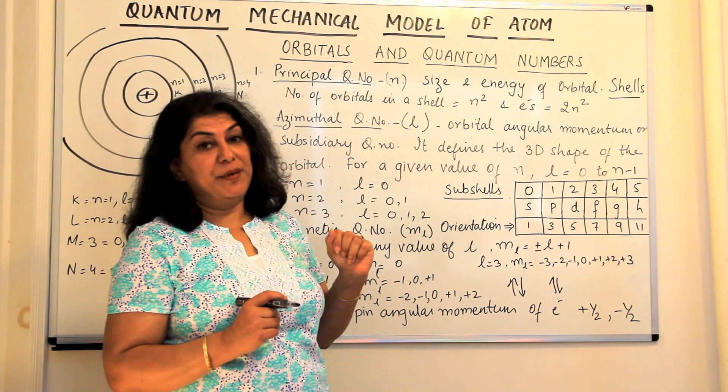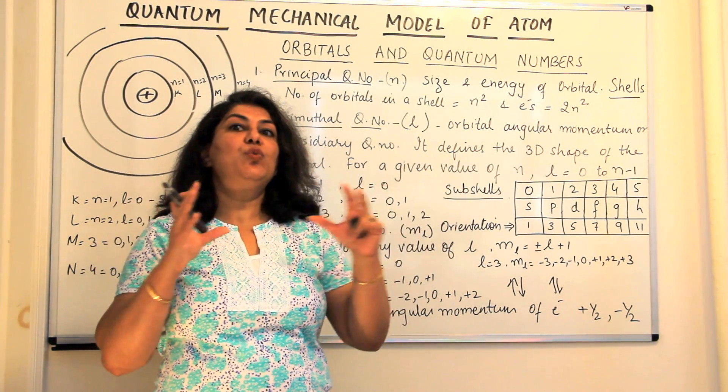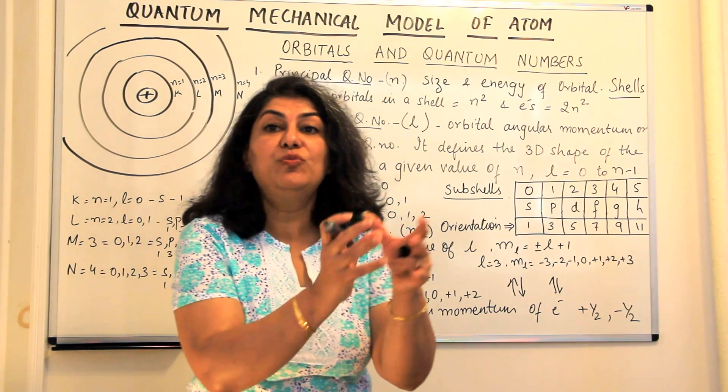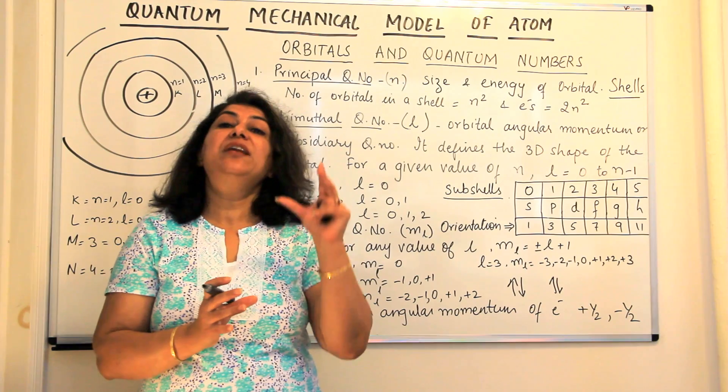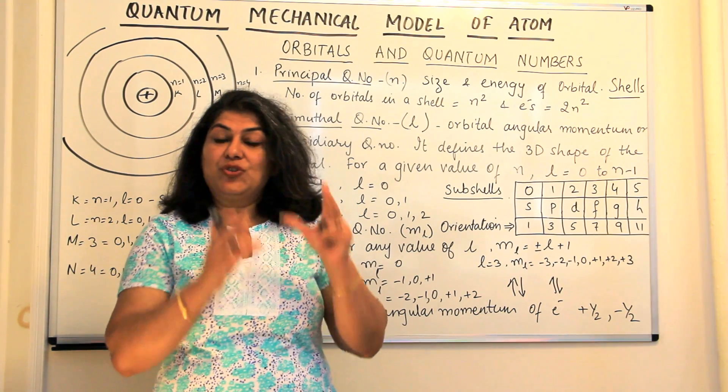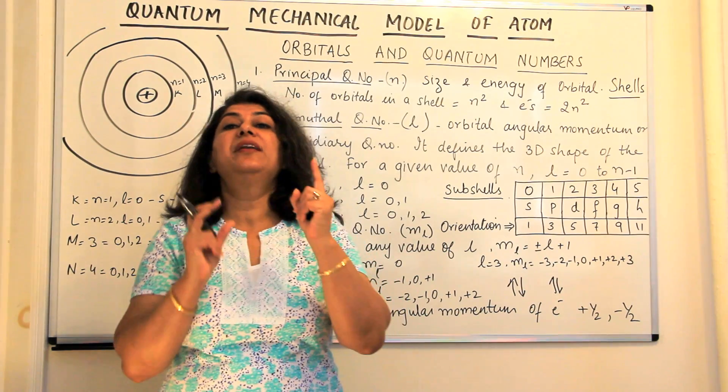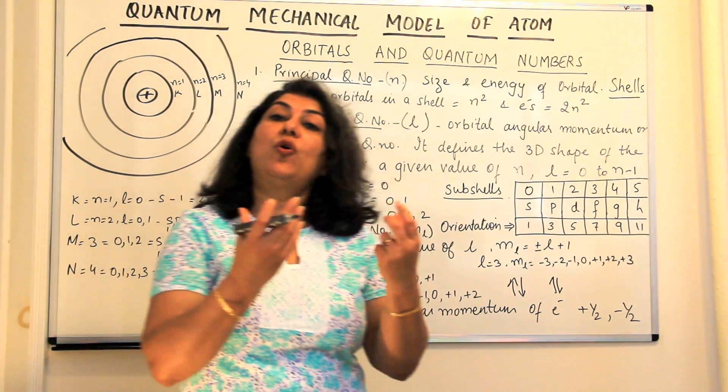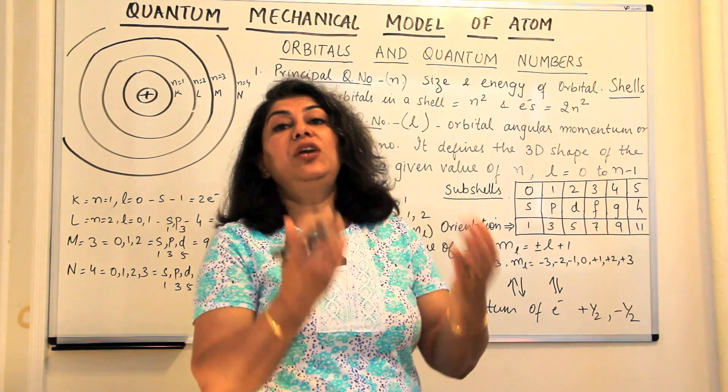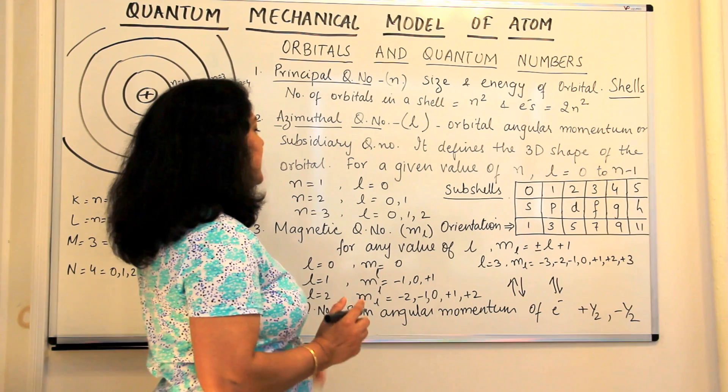The different apartments present on each floor would then be the value of l, that is the azimuthal quantum number. And now, once you know about the apartments, you would like to know the different rooms in each apartment. Each room forms an orbital. So the magnetic quantum number takes us to the orbitals, how many orbitals are present in each subshell.